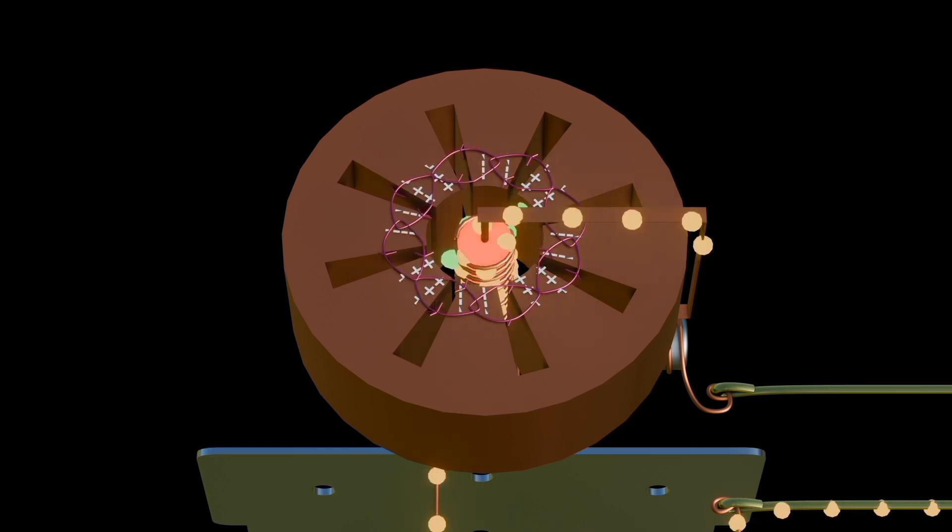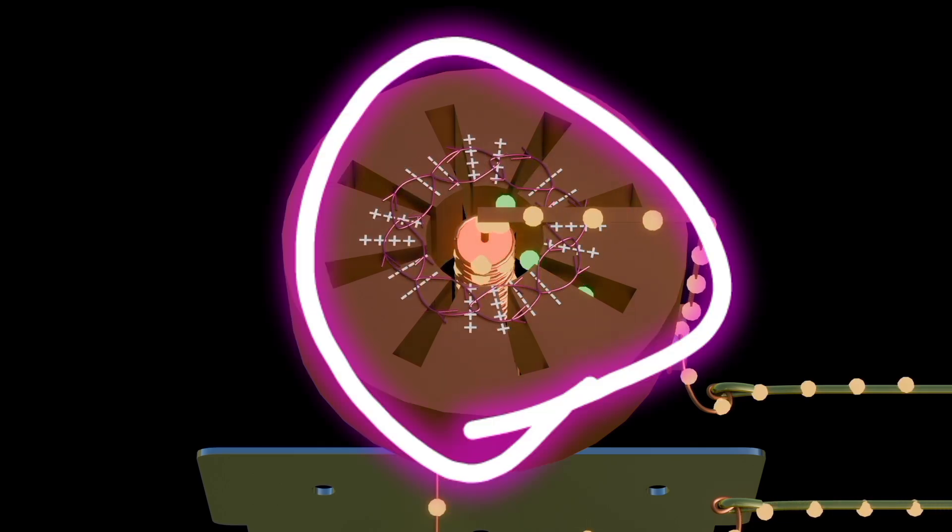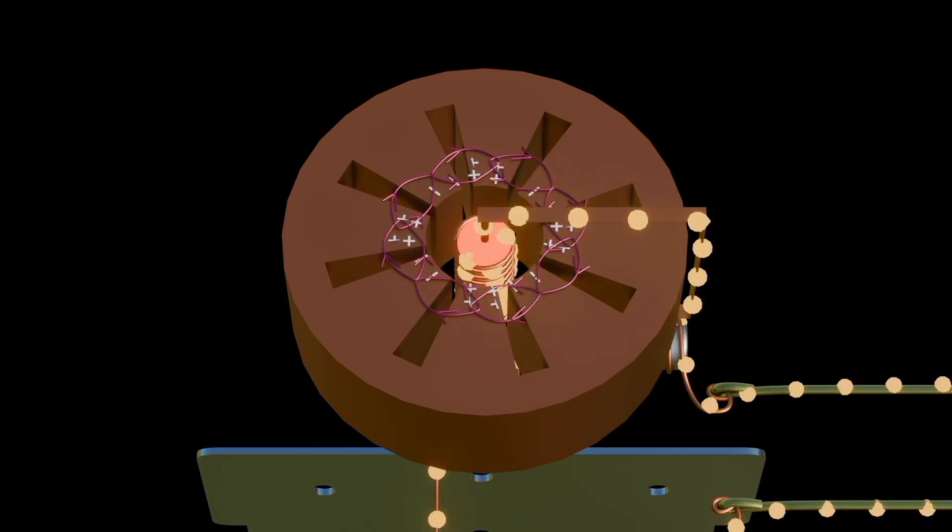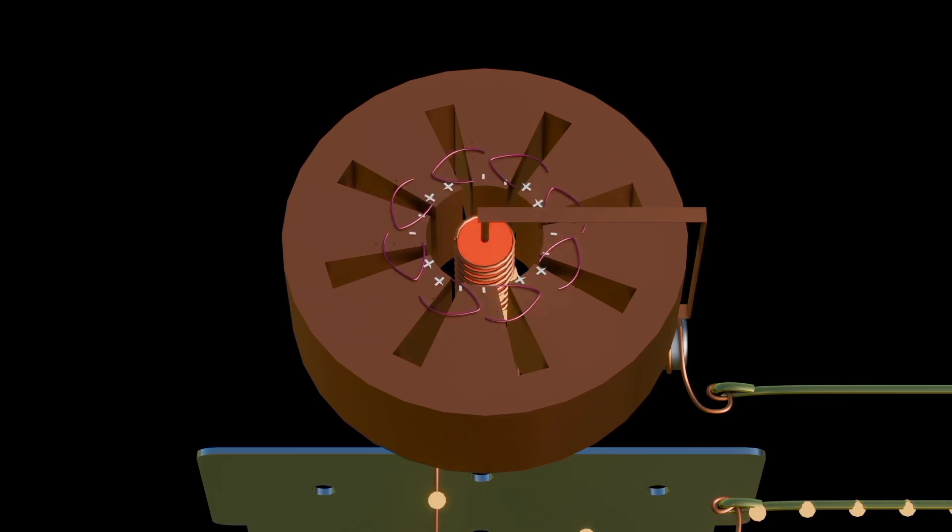The interactions of the accelerating electrons and magnetic fields continue. The electrons being emitted will follow a curved path towards the positive cavity and the alternating charges.